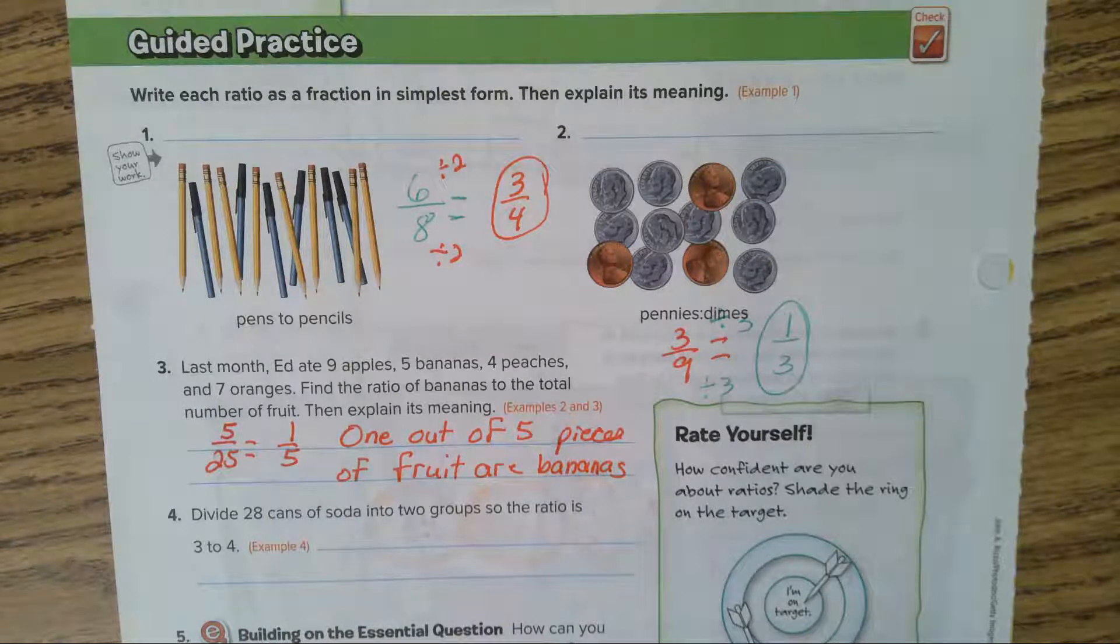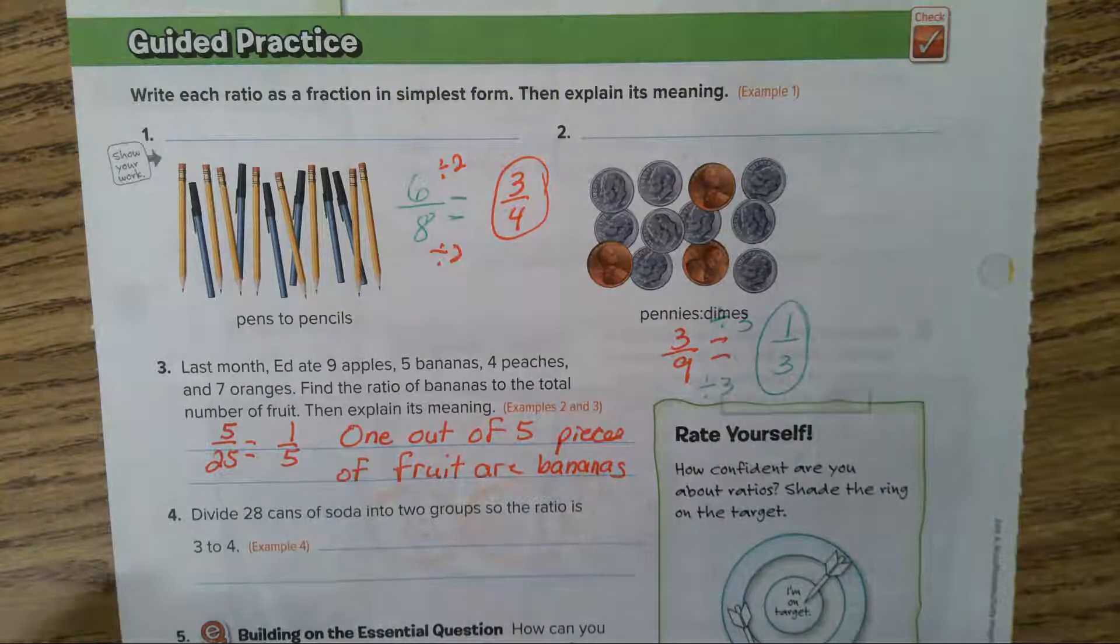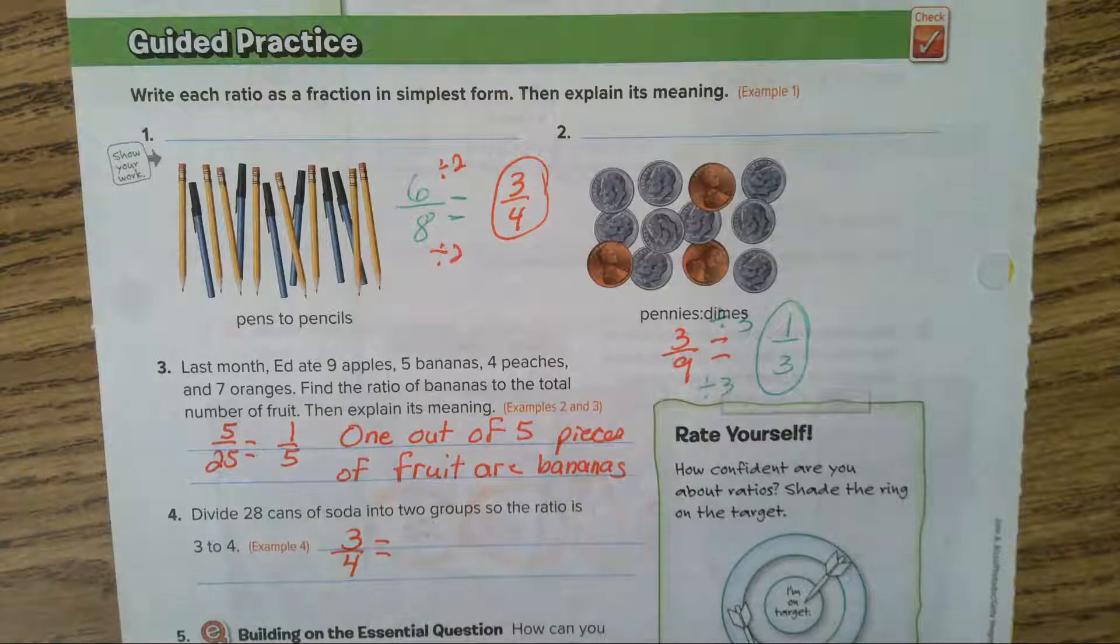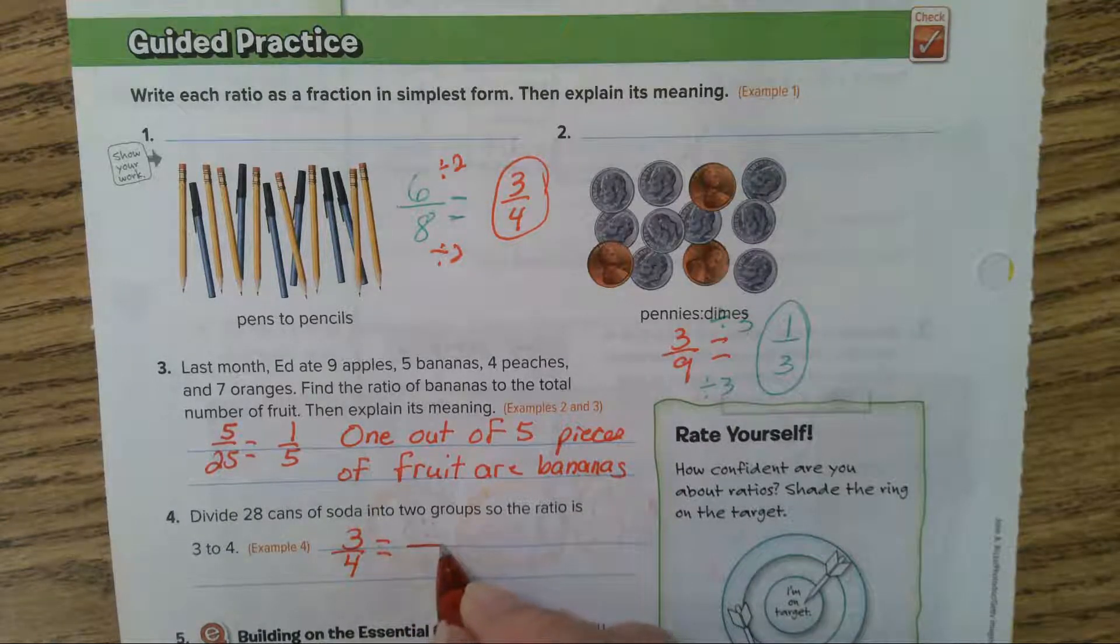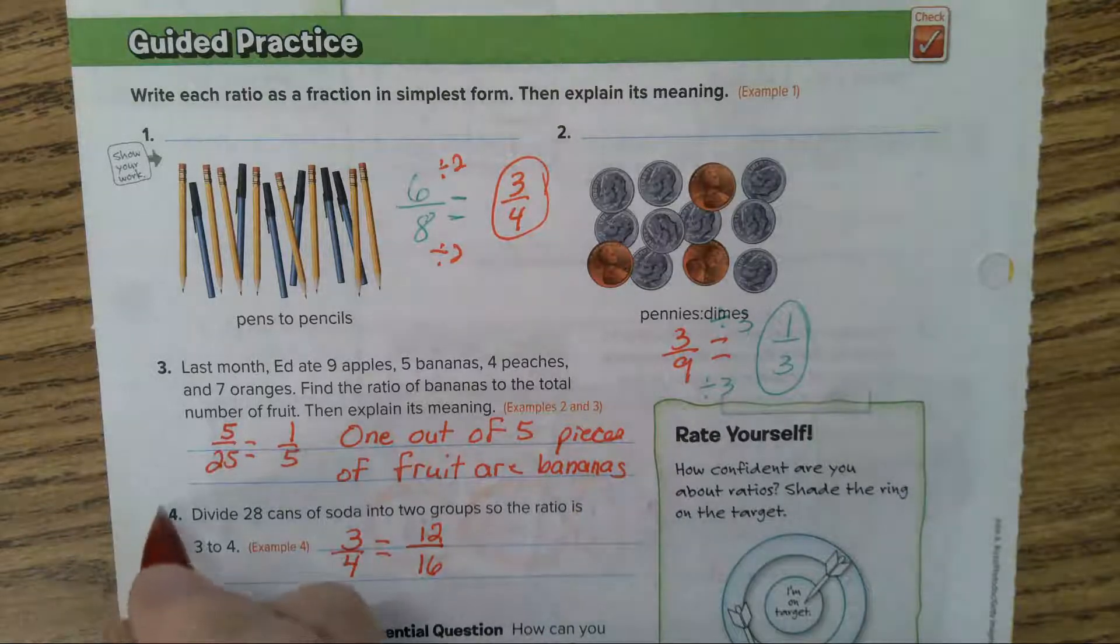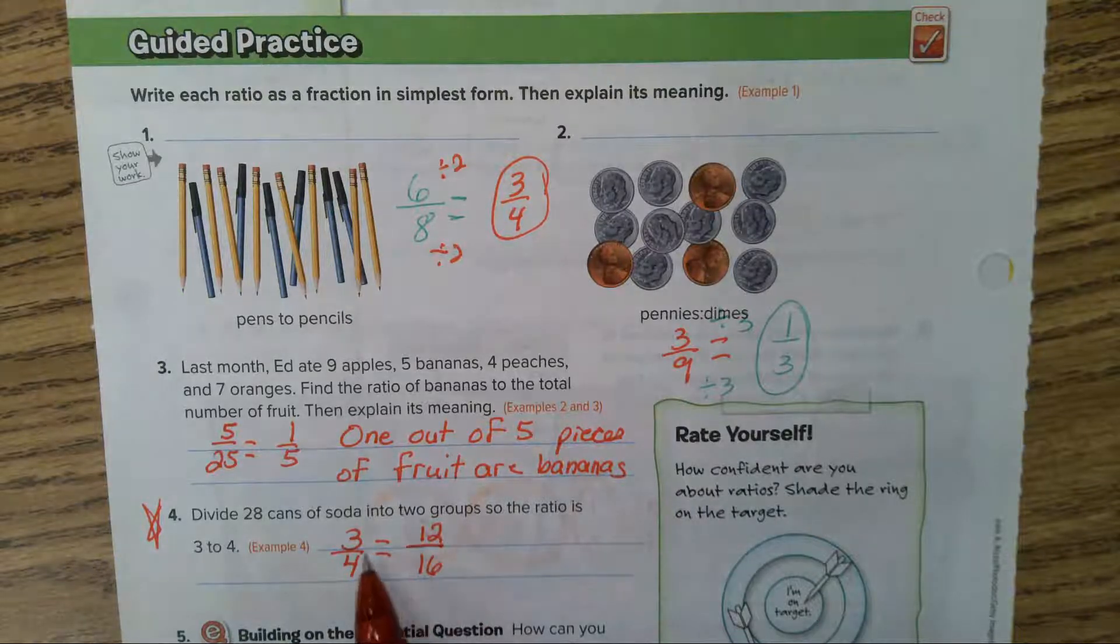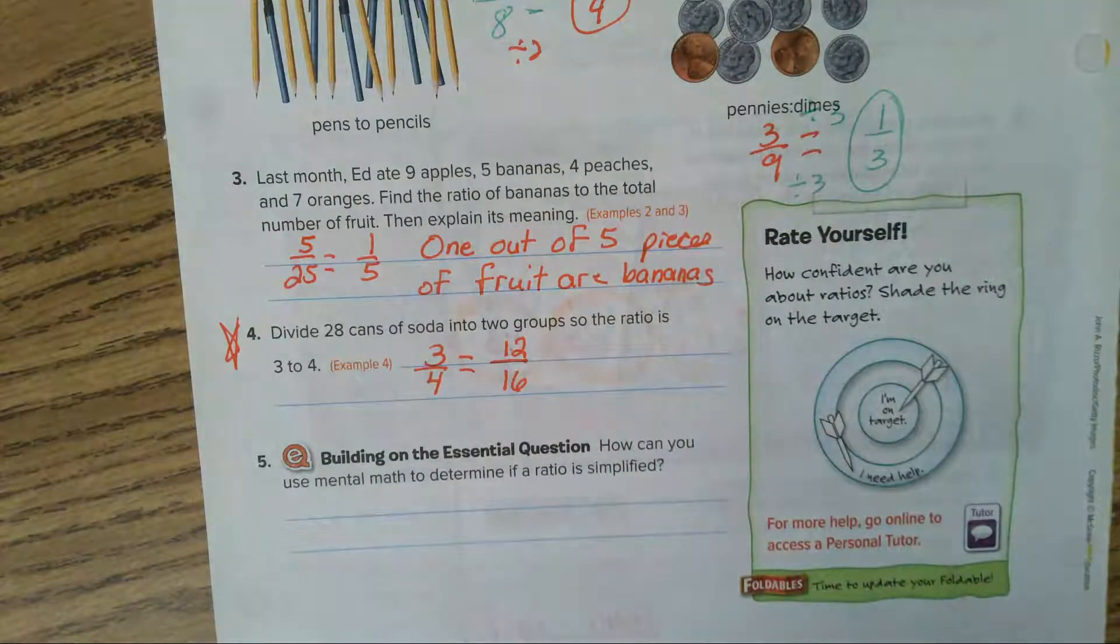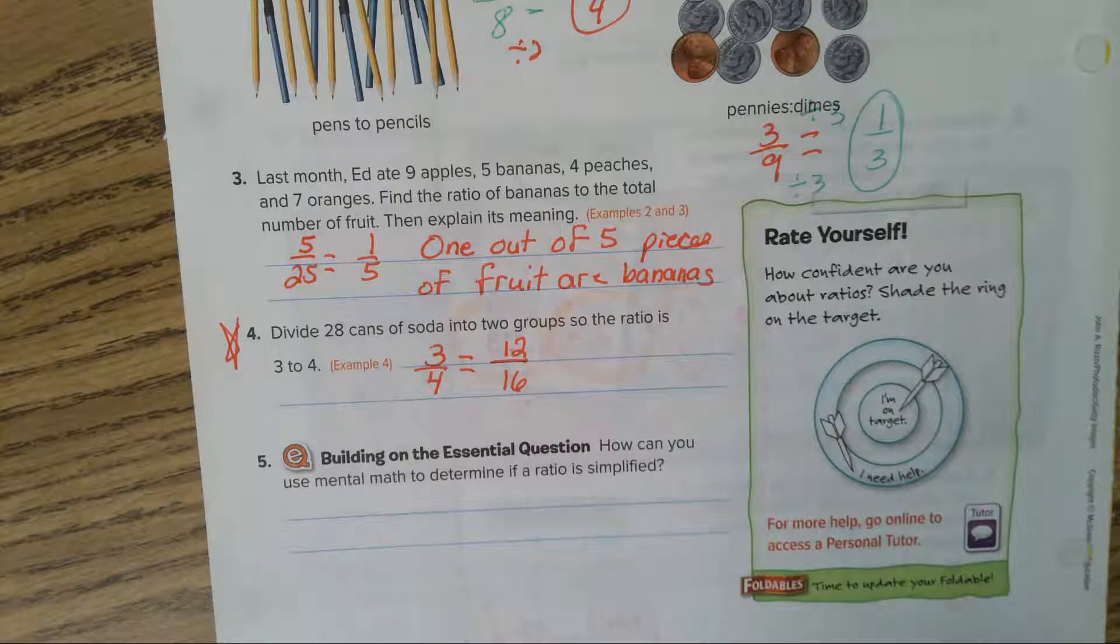Number 4. Divide 28 cans of soda into two groups so the ratio is 3/4. It's got to equal 28. It's 12 over 16. 12 plus 16 is 28. Those are sort of hard because you just have to guess. I knew it wasn't going to be 9 over 12 because 9 plus 12 isn't big enough. 3 times 4 is 12, 4 times 4 is 16. 12 plus 16 is 28.